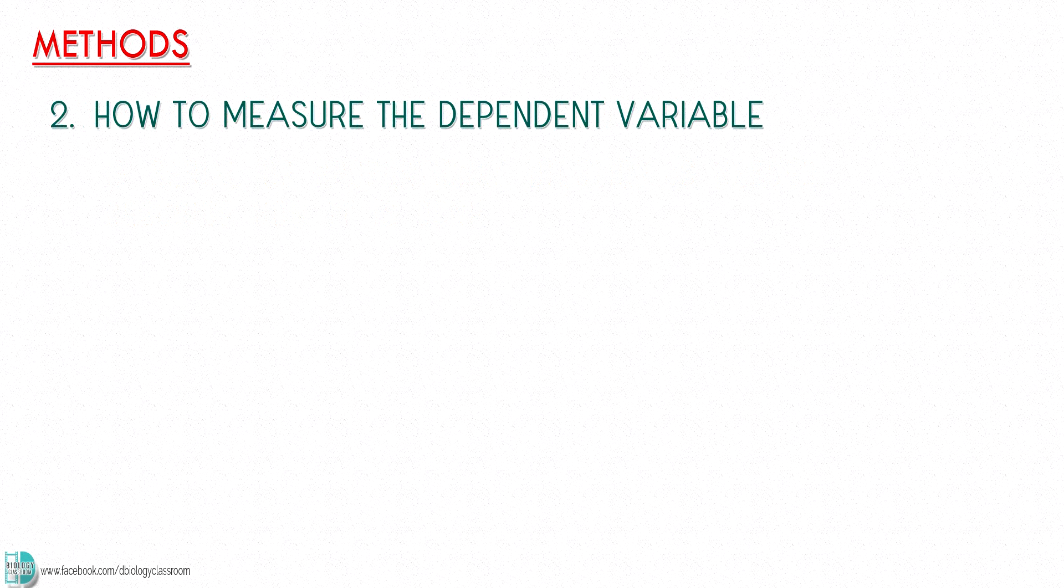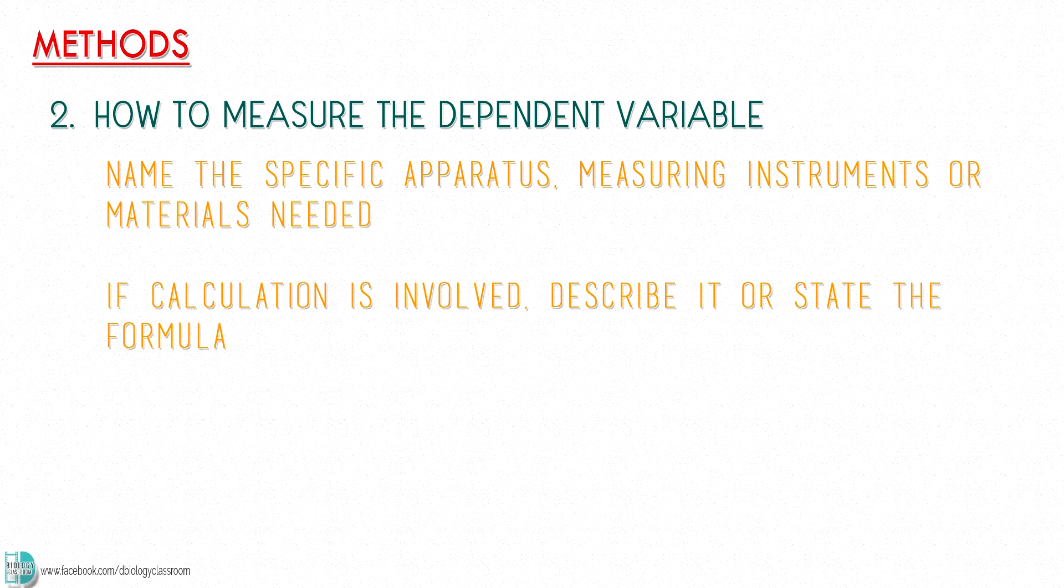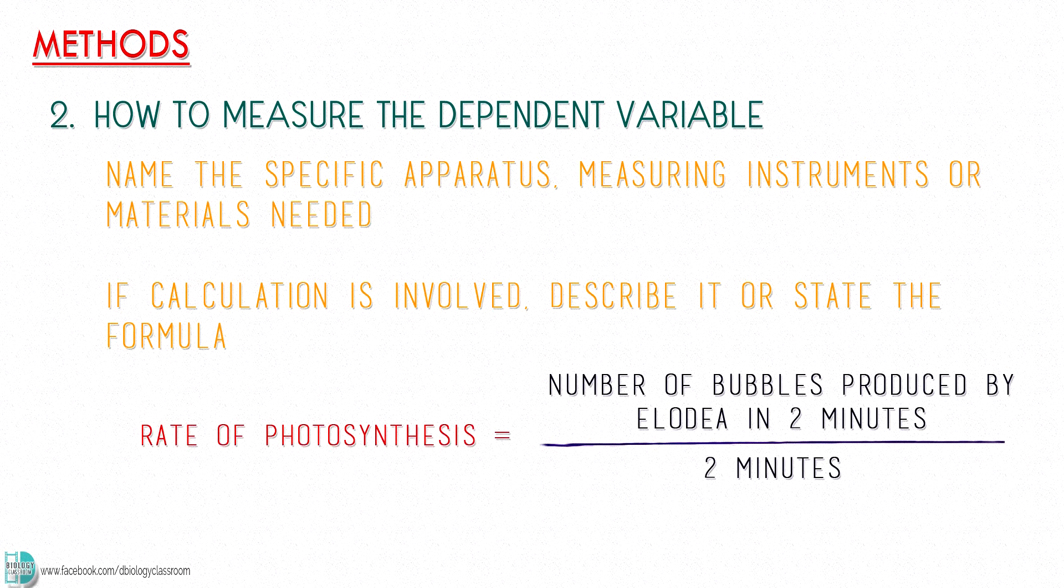Number two, how to measure the dependent variable. You have to name the specific apparatus, measuring instruments or materials needed. If any calculation is involved, describe it or state the formula. For example, number of bubbles produced by Elodea is divided by the time taken for the experiment to indicate the rate of photosynthesis.